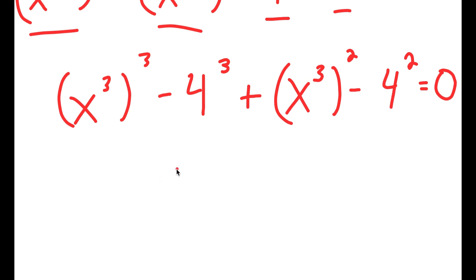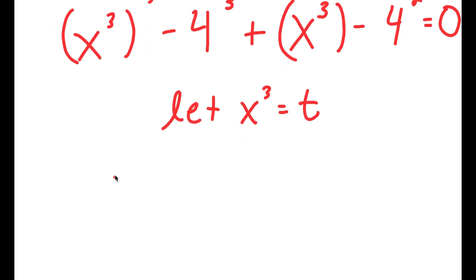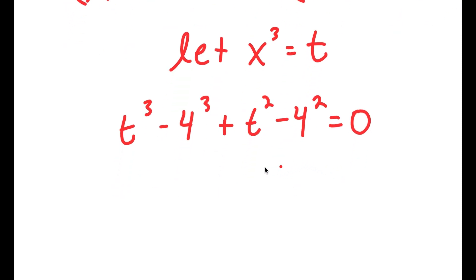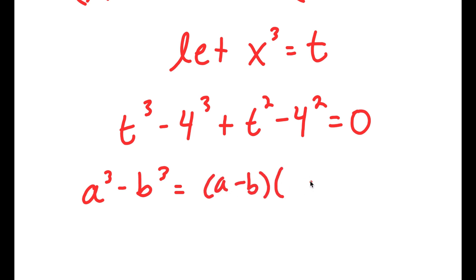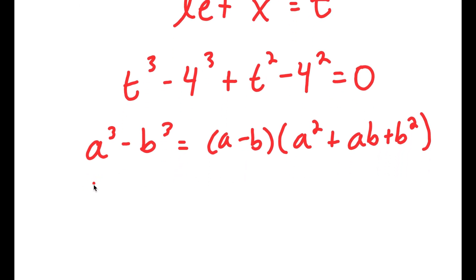I'm going to let x to the power of 3 equal t. So I get t to the power of 3 minus 4 to the power of 3 plus t squared minus 4 squared is equal to 0. If I have something in the form a to the power of 3 minus b to the power of 3, this is equal to a minus b times a squared plus ab plus b squared. Also, if I have something in the form a squared minus b squared, this is equal to a plus b times a minus b.